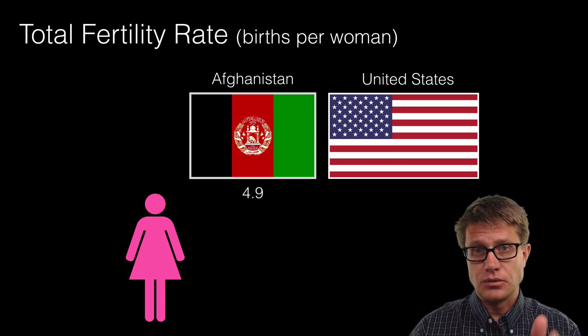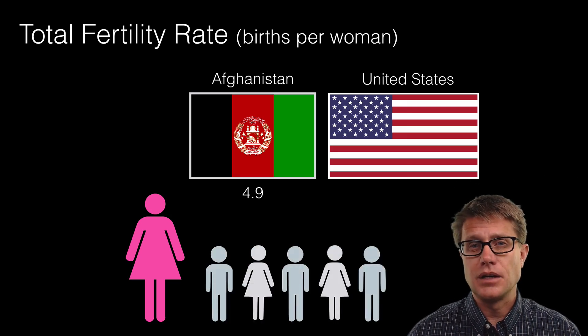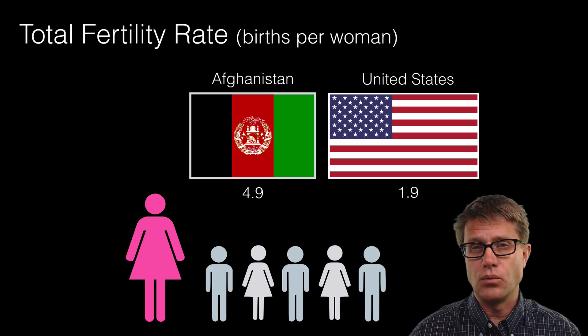So this imaginary woman who is around today will in general have five children. If we look at what it is in the U.S., that number is going to be 1.9.